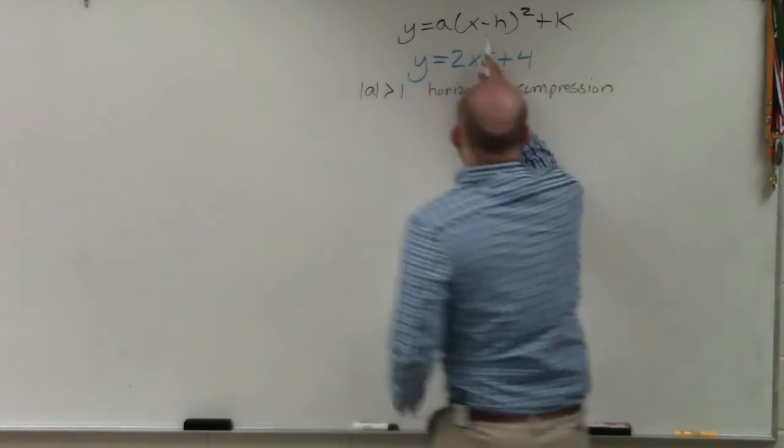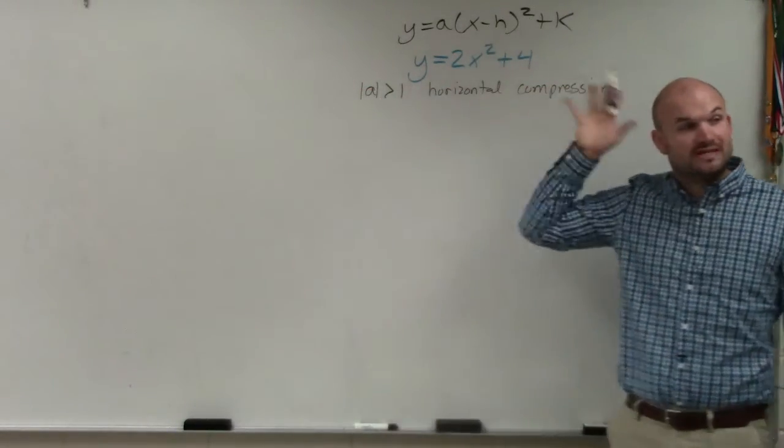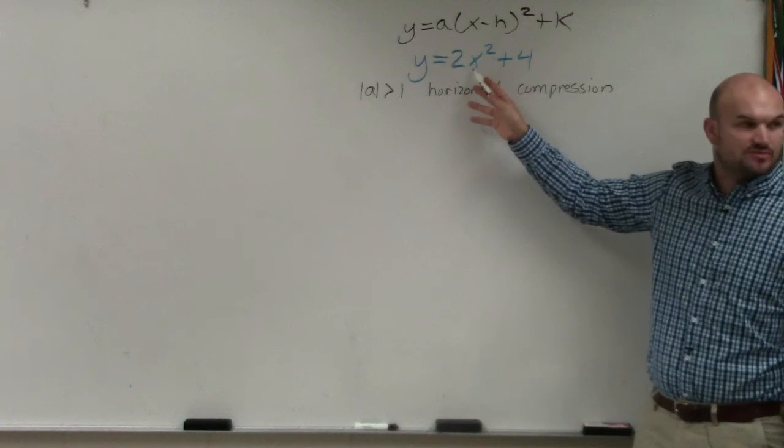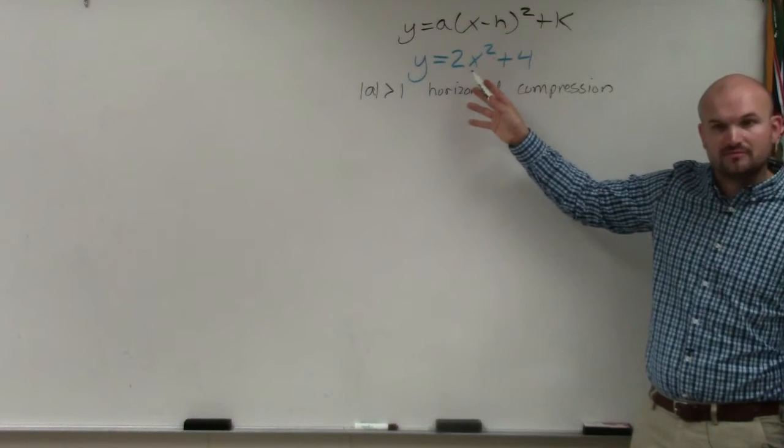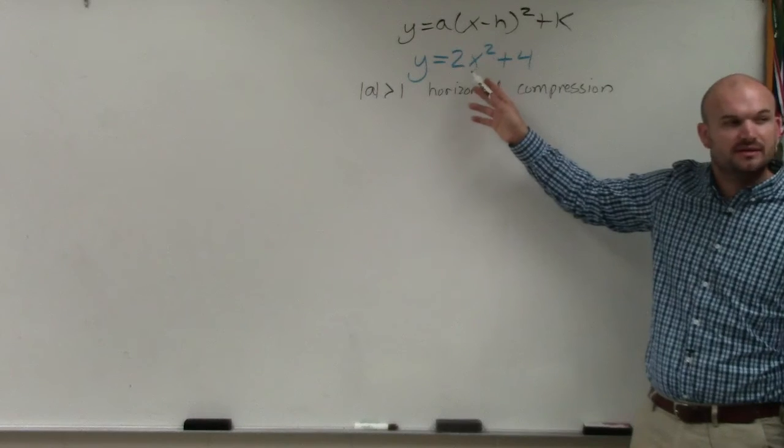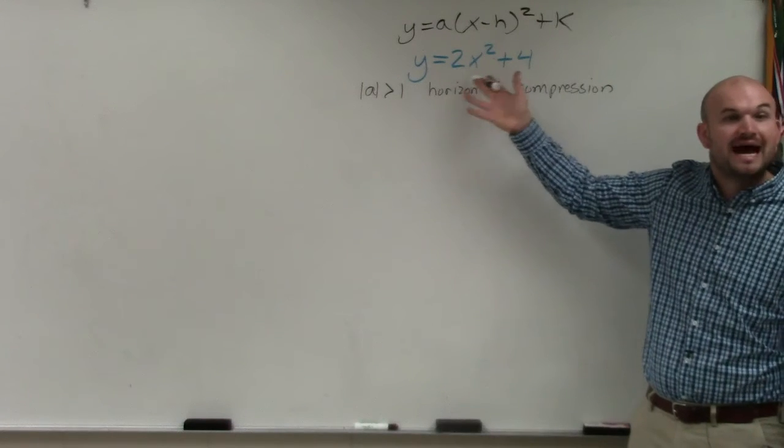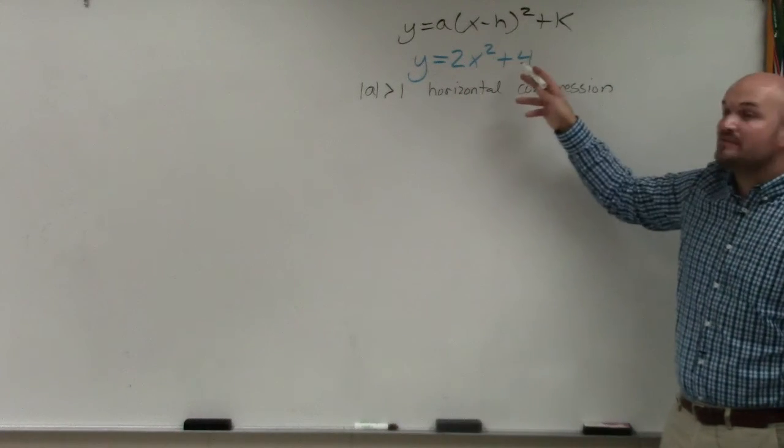We know that h is going to be your horizontal translation, but there's nothing being subtracted from the x inside the squaring, inside the function, right? There's no x minus anything inside the parentheses. And then we have plus k.